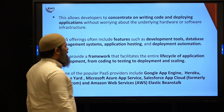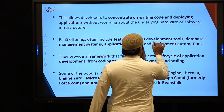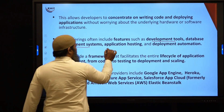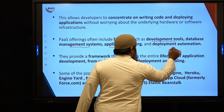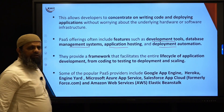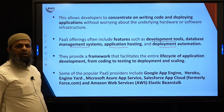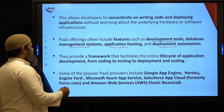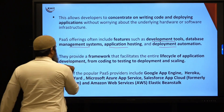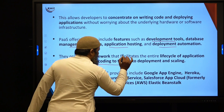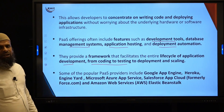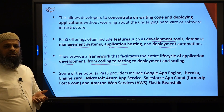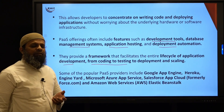What features does PaaS provide? In PaaS, they provide development tools, database management systems, application hosting and deployment automation — all the things required to develop and deploy an application. This framework facilitates the full life cycle of application development from coding to testing to deployment and scaling. Even scaling of resources is provided with the help of PaaS.